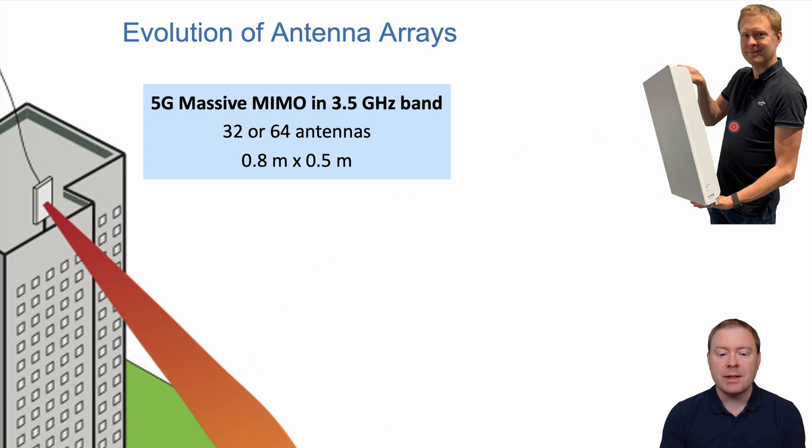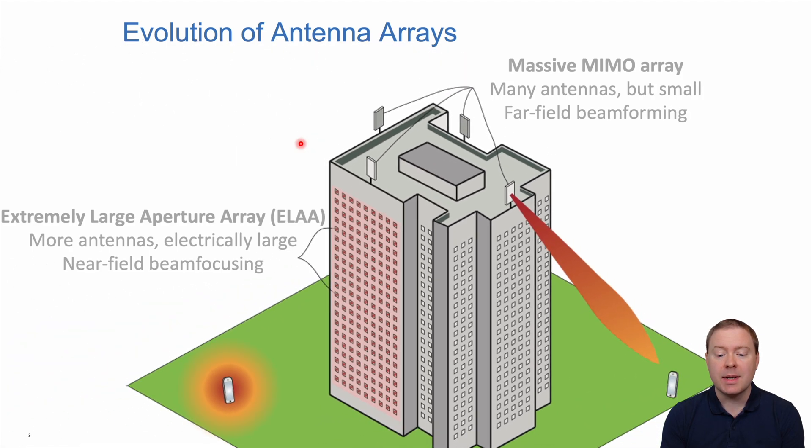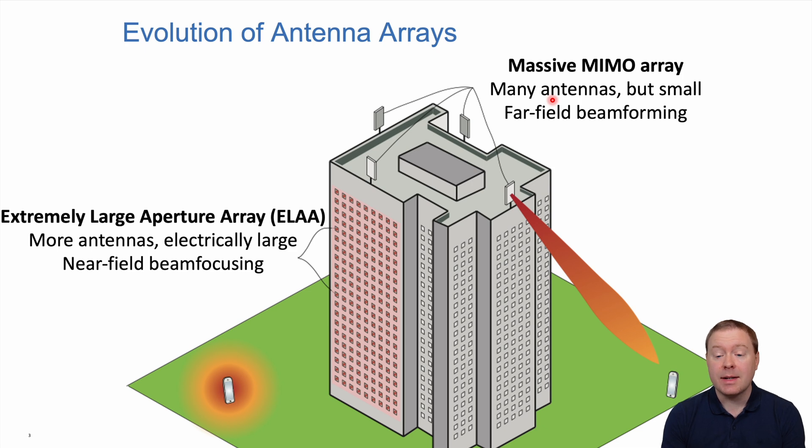The base station antennas used in 5G are roughly half a meter wide and contain maybe 32 or 64 different antennas. We call it massive MIMO because there's a large number of antennas compared to the past. When you deploy this base station on typical locations, even with many antennas, they look quite small, so we're still doing far field beamforming, creating beams towards users in angular directions.